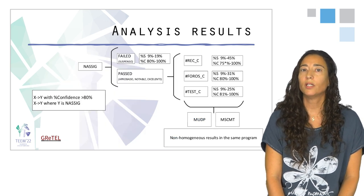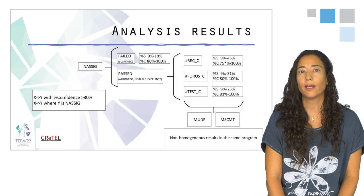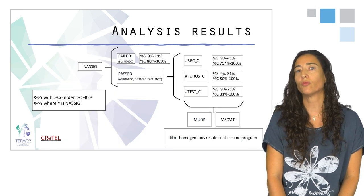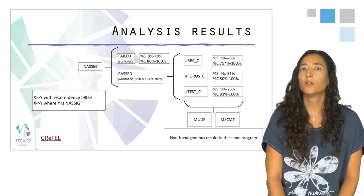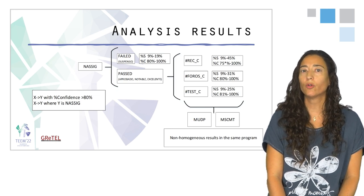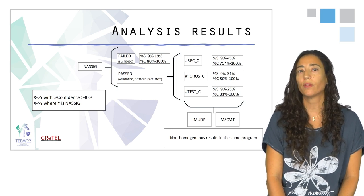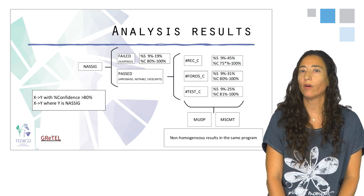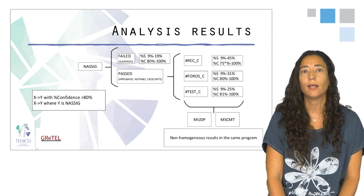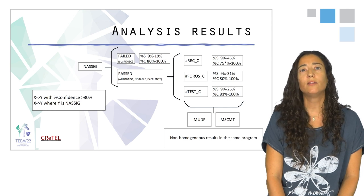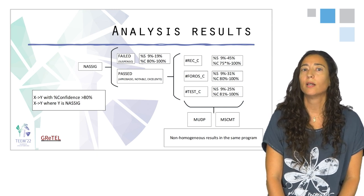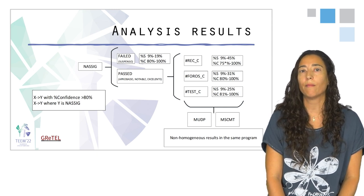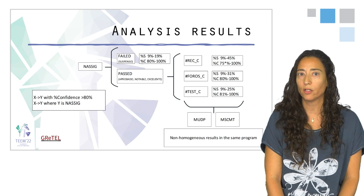The result is a huge set of association rules. For this study, we select the rules with a confidence above 80%, and within these, the ones that imply our academic success indicator.